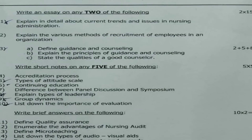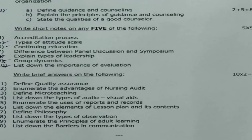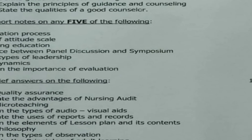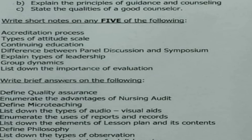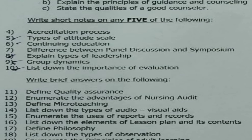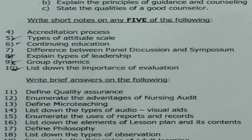The next section is short notes. You will be given six questions and you have to answer any five, with each question carrying five marks, totaling 25 marks. The questions are: accreditation process, types of attitude skills, continuing education, difference between panel discussion and symposium, types of leadership, group dynamics, and list down the importance of evaluation.